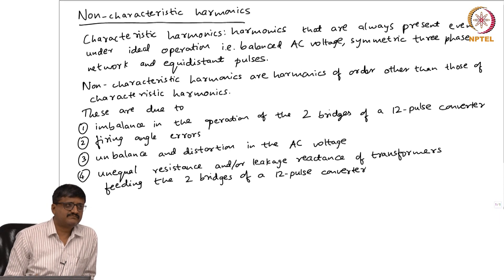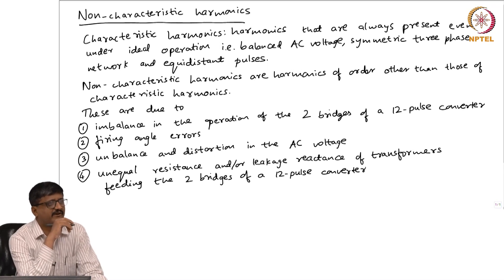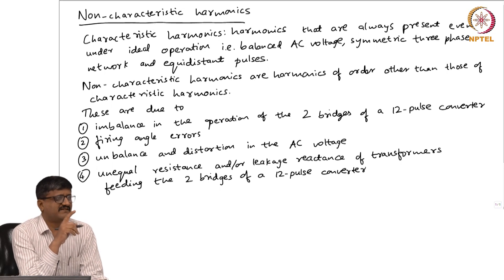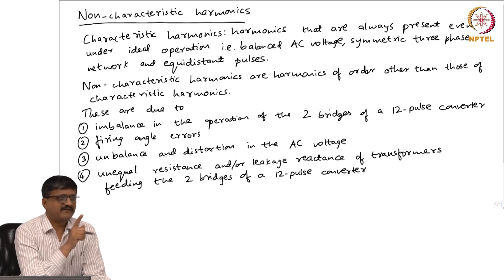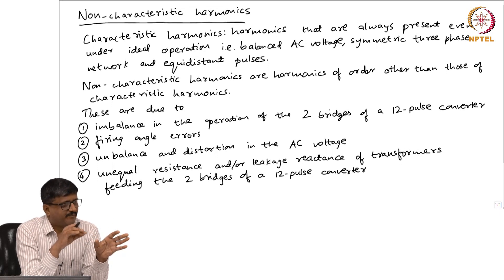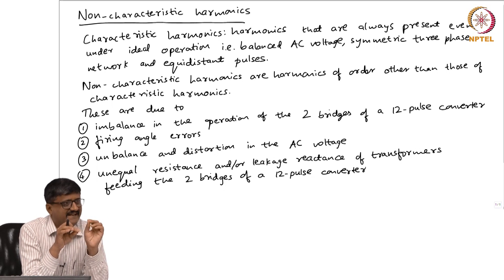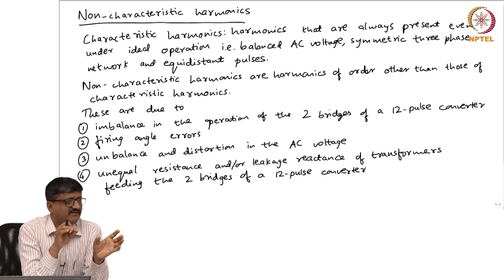Another question concerns the assumption of unequal resistance and leakage reactance. The assumption made earlier was that the resistance and leakage reactance are the same for both transformers. If they are not the same, there will be no perfect cancellation. However, the point is that these resistances and leakage reactances are small. So although there will not be complete elimination, there will be a drastic reduction in all those harmonics which are not supposed to be there ideally.